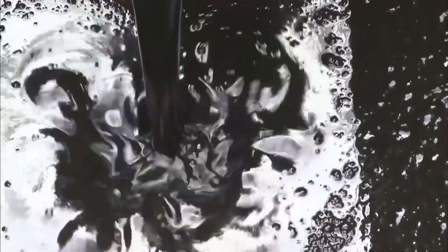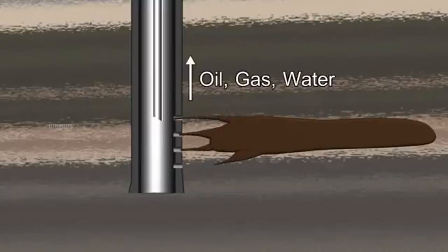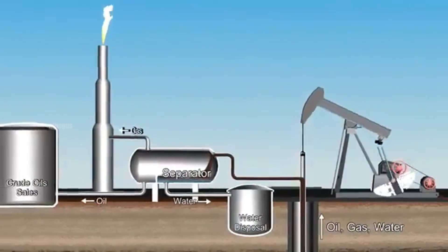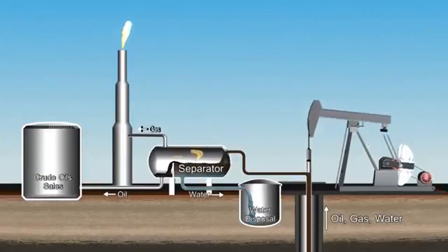The produced fluid from the well is directed to a device called a separator or separation tank. Inside this tank, the gas, oil and water components naturally separate based on their differences in specific gravity.